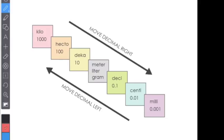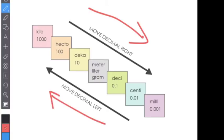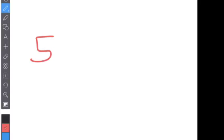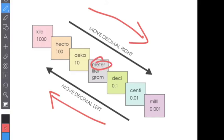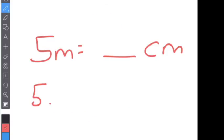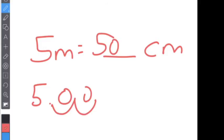Now let's talk about metric. Metric is actually easier than customary, and you'll get our little chart. When you move down or to the right on the chart, you move the decimal to the right; when you go up or to the left, you move the decimal to the left. For example, if I have five meters and want to know how many centimeters, I start at meters and hop two places to the right — one, two — so five becomes 500 centimeters.